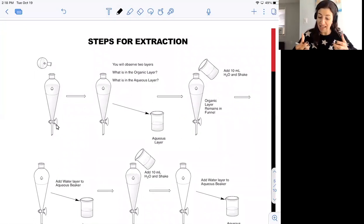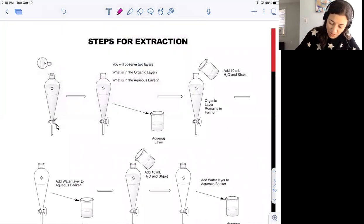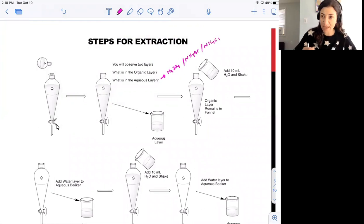Think about what's likely to be in that aqueous layer. It's going to be residual H2SO4 and ammonium salts that we're hoping to get rid of. You'll be able to see the separation between the oil and water clearly with your naked eye, and you'll be able to drain the aqueous layer away from the organic.